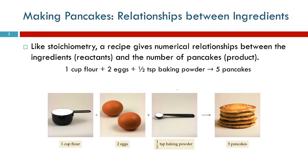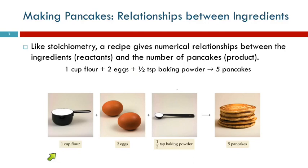A recipe is a lot like a chemical equation. It describes how much of this and how much of that do you need to make how much of this thing. This is a very simple recipe — I wouldn't recommend trying it, these pancakes are not going to turn out very well. But: one cup of flour, two eggs, half a teaspoon of baking powder, and you can make five pancakes from that. And here we have pictures just to make it even nicer.